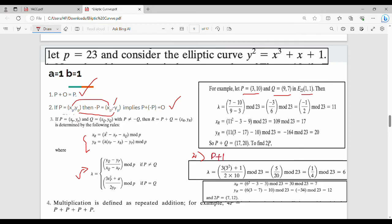For P + P = 2P, we use the second formula for λ. Substituting the values and computing xᵣ and yᵣ, we get 2P = (7,12).